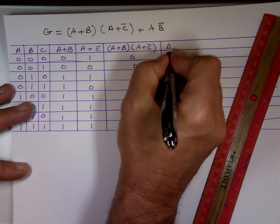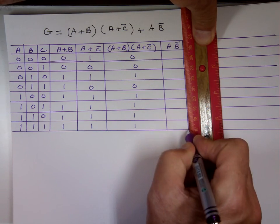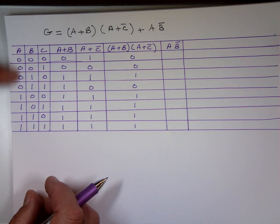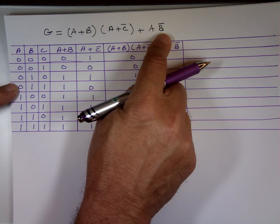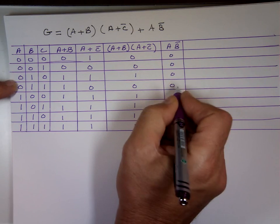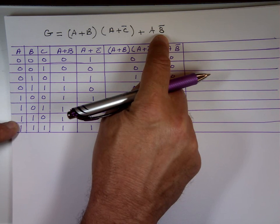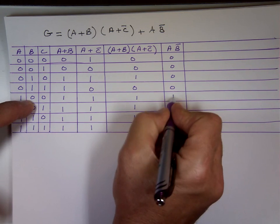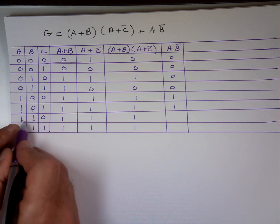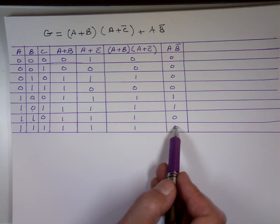Now I've got to find A B bar. When A is zero it doesn't matter what B is — zero AND anything is zero — so the first four are zeros. Now A is one, and B has to be zero for this to be one. So one AND zero gives one. When B is one, you complement to zero — zero AND zero is zero. So as long as A is one and B is zero, you'll have a one.